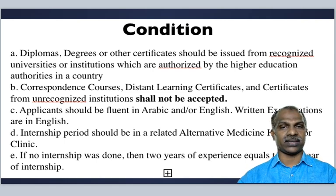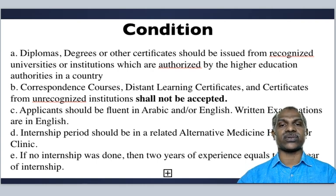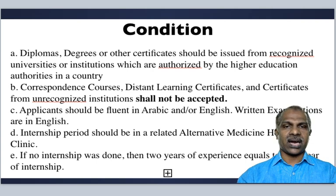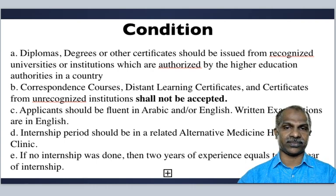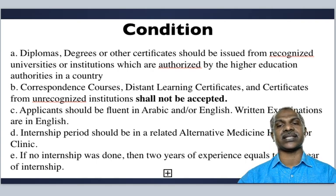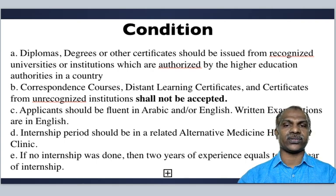Conditions: diplomas, degrees, or certificates must be issued from recognized universities or institutions authorized by higher education authorities. Correspondence courses, distance learning courses, and certificates from unrecognized institutions shall not be accepted in UAE. Applicants should be fluent in Arabic and/or English — the written examinations are in English. The internship period must be related to the specific alternative medicine specialty. If no internship was done, then 2 years of experience is considered equivalent to the internship, plus an additional 2 years of experience is required.